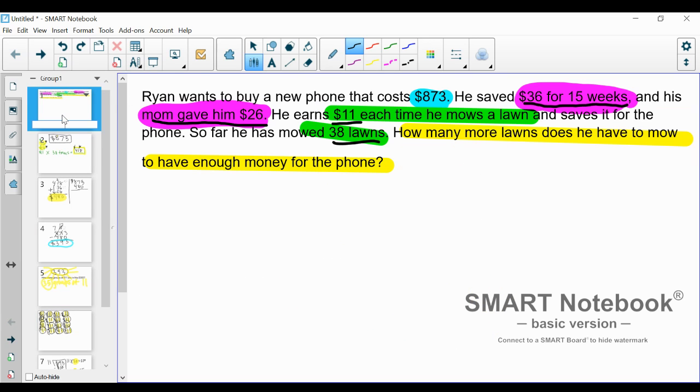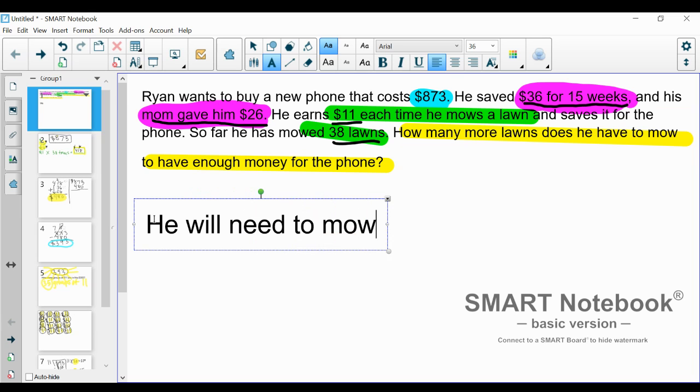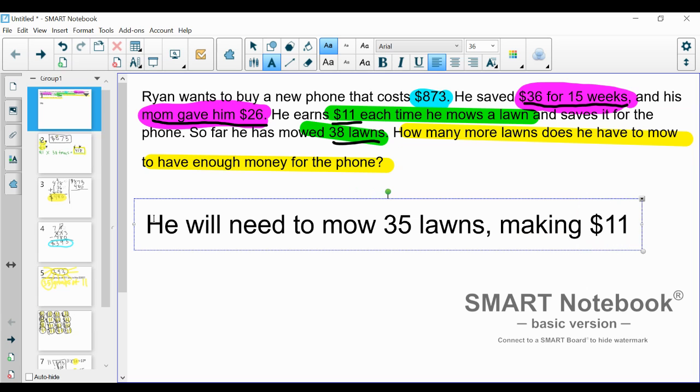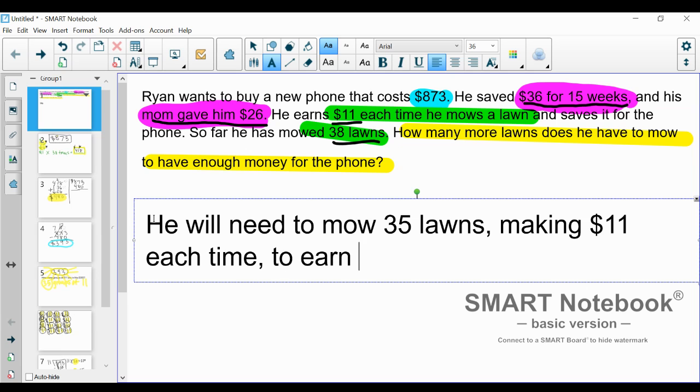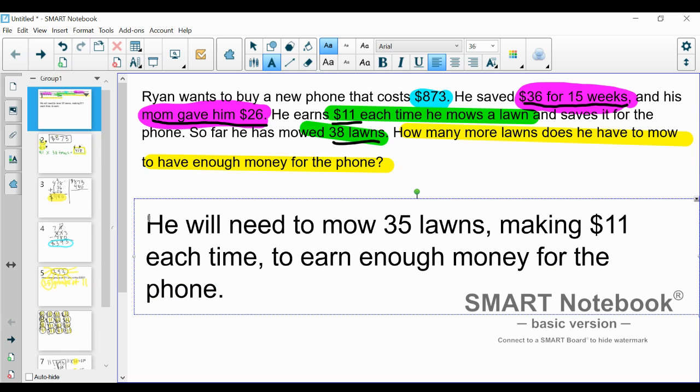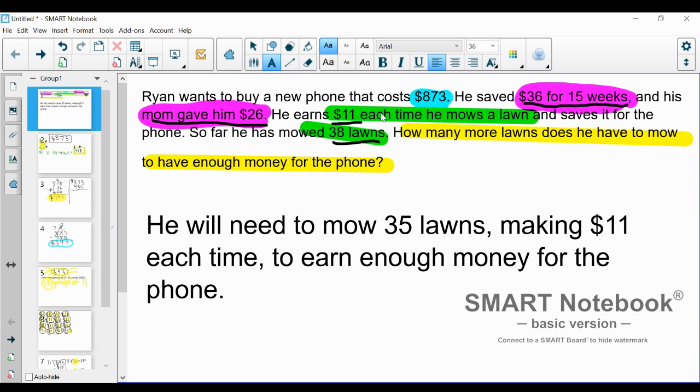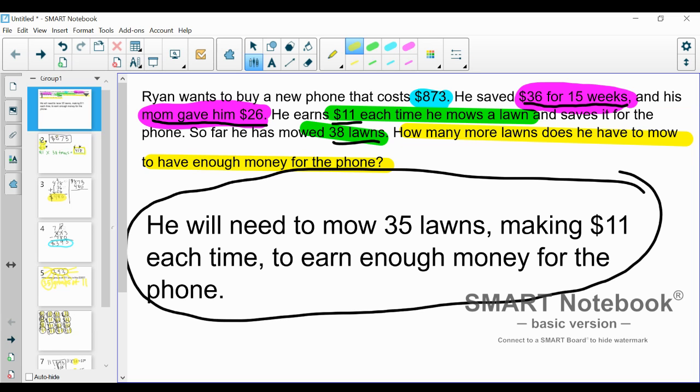So back to our question here. How many more lawns does he have to mow to have enough money for the lawn? Well, we just figured it out. He will need to mow 35 lawns, making $11 each time. Now, we did answer our question here. So we are done. But there was one thing that I didn't explain on our division problem. So I'm going to go over that really fast. First, I'm going to circle my answer because you should always do that. Go back to our division problem here.